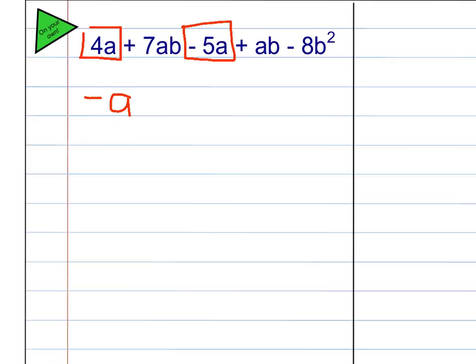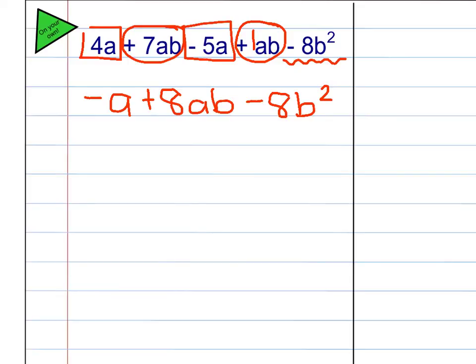Then, I have a 7AB, and then just an AB. Now, remember, the coefficient there is a 1, so when I combine those, I'm going to get 8AB. And then this one, kind of lonely, but that can't be combined with anything else, because it has a B squared, and I don't see any more of those, so I just need to make sure to write it down here. So, hopefully you got that, and you understand it. Thank you.